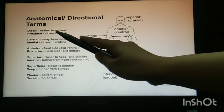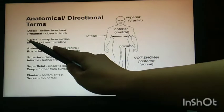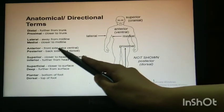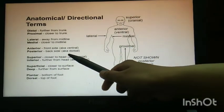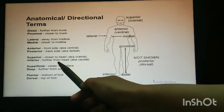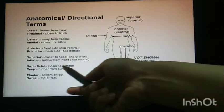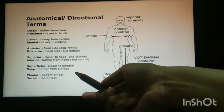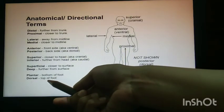Distal: away from the trunk. Proximal: closer to the trunk. Lateral: away from the midline. Medial: closer to the midline. Anterior: front side. Posterior: back side. Superior: closer to the head. Inferior: away from the head. Superficial: closer to the surface, closer to the skin. Deep: away from the surface, away from the skin. Plantar: the bottom or sole of your foot. Dorsal: the top of your foot.